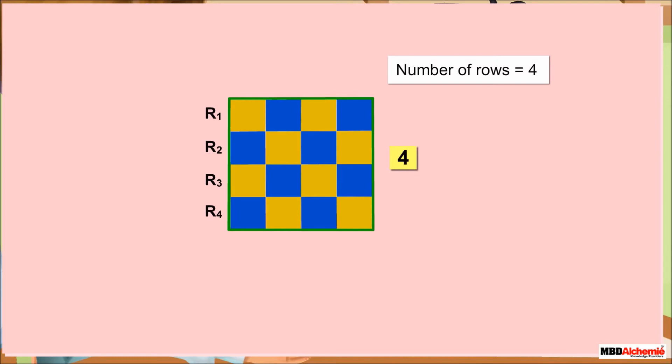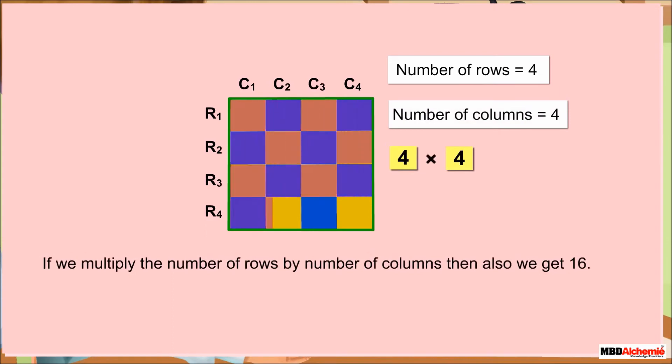In this square, the number of square counters in a row is equal to 4, and the number of square counters in a column is also equal to 4. If we multiply the number of rows by the number of columns, then also we get 16.